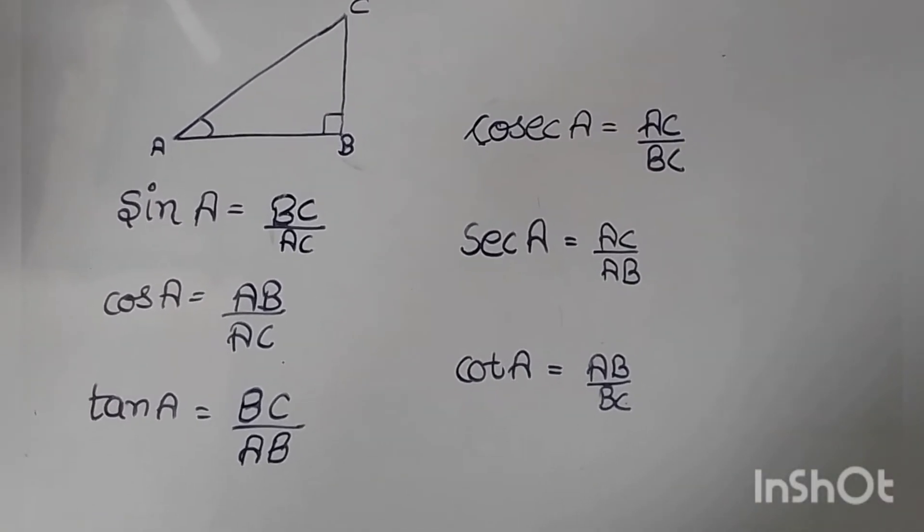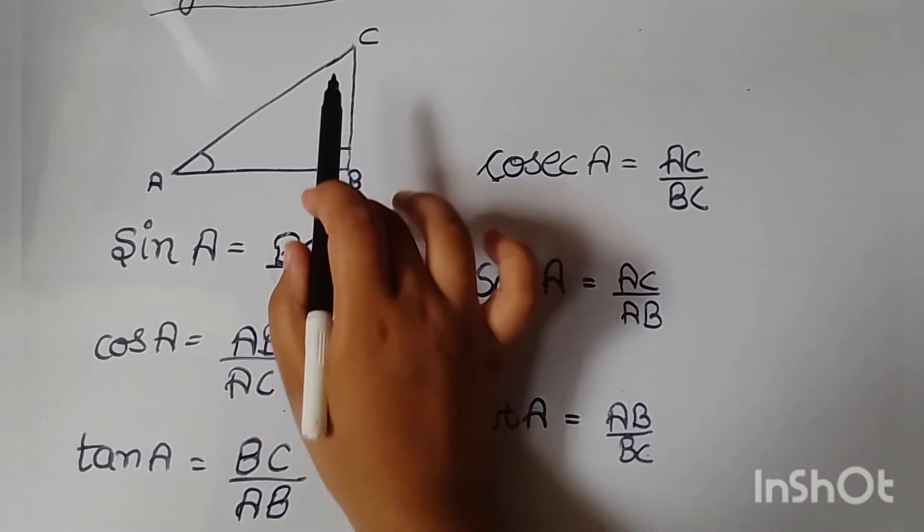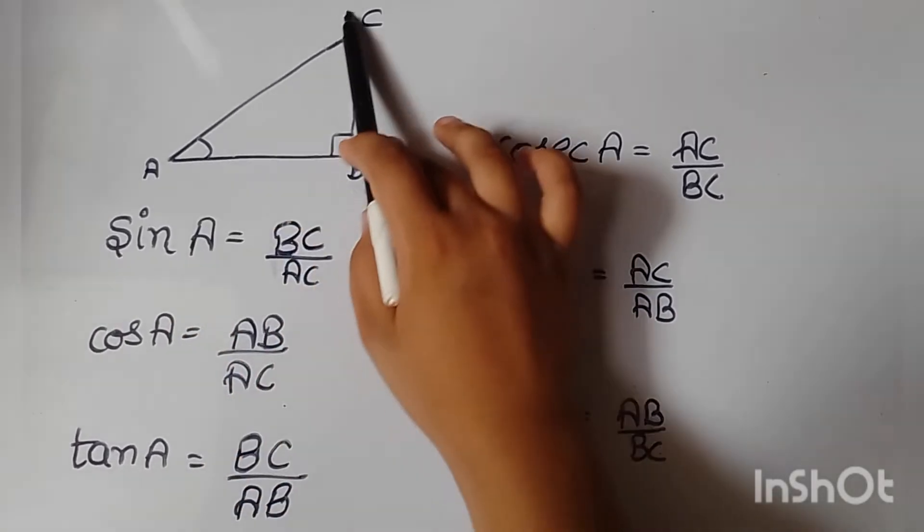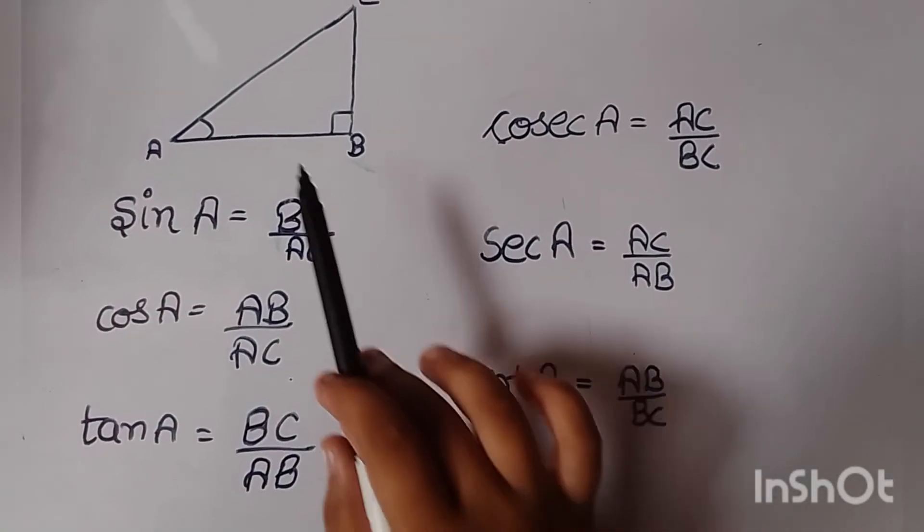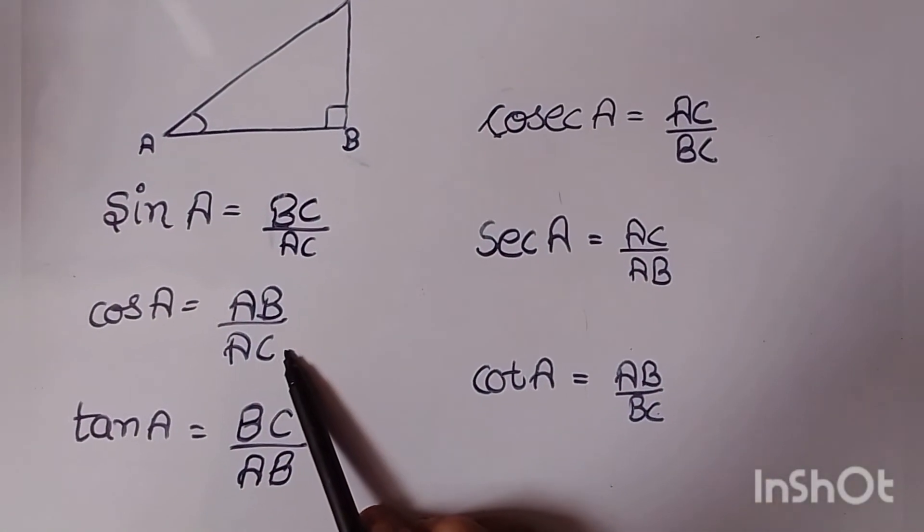For sine function, we take perpendicular upon hypotenuse, that is BC upon AC. Cosine is base upon hypotenuse, AB upon AC.